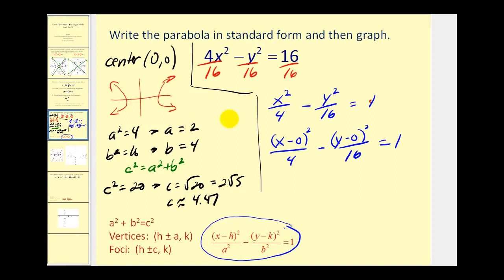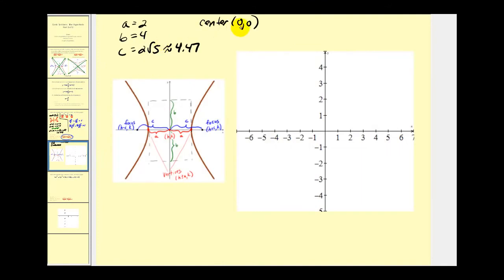Let's take all this information to the next screen and make a graph. We have the center (0, 0), and we know we have a horizontal transverse axis. We'll start by plotting the center. Since a equals 2, we add and subtract a from the x-coordinate: the two vertices are (2, 0) and (-2, 0).